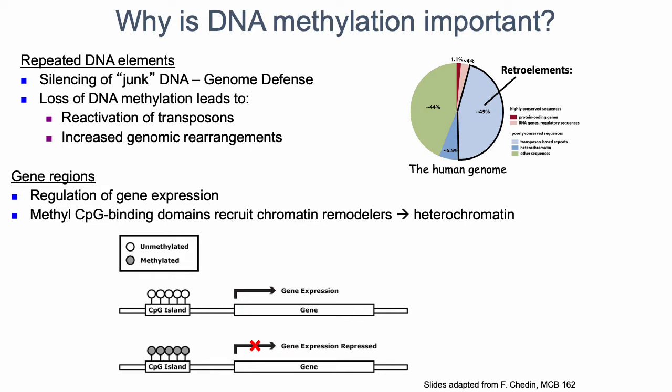In terms of gene regulation, DNA methylation plays a pretty critical role at CpG islands — clusters of CpG dinucleotides near promoters of a lot of genes. Typically, methylation of those CpG islands leads to repression of gene expression, whereas lack of methylation tends to promote gene expression, or at least not inhibit it. There are also a number of protein domains that recognize methylated CpG dinucleotides and then interact with the epigenetic machinery to also impact gene regulation.